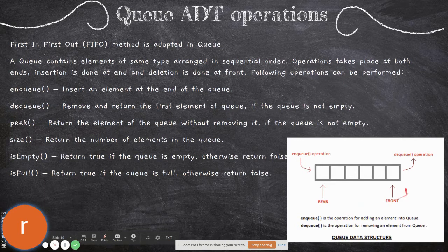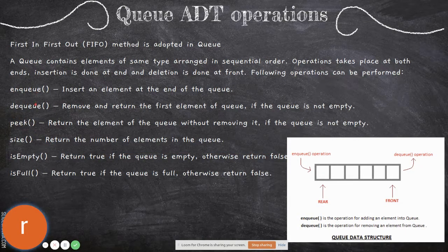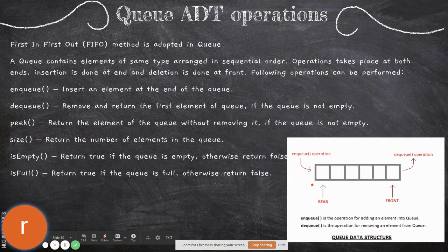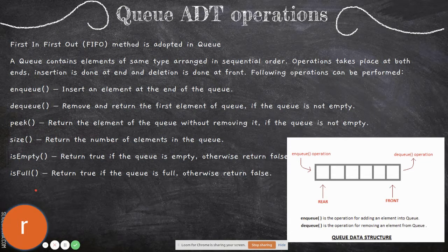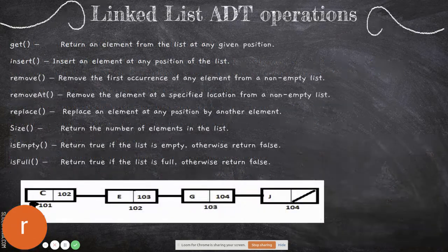Imagine an array structure where we strictly follow the queue structure. There is a front and a rear — from the front, elements are removed, and at the rear, elements are added. These two operations are called dequeue for removal and enqueue for addition. The functions defined are enqueue, dequeue, peek — which gives the front element — size, and isEmpty to check whether the queue is empty. These are the functions with their descriptions, but the actual code implementation is not given — that is what we call an abstract data type.